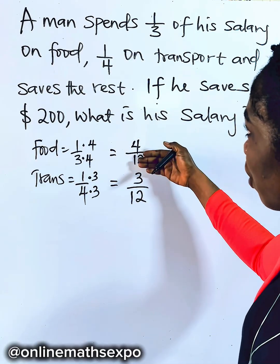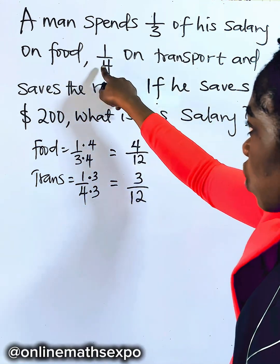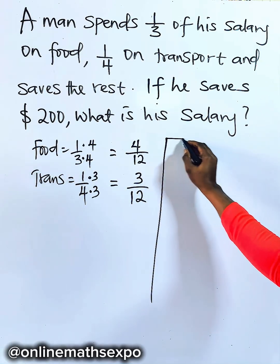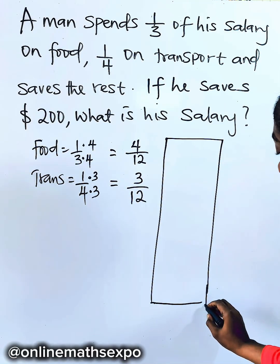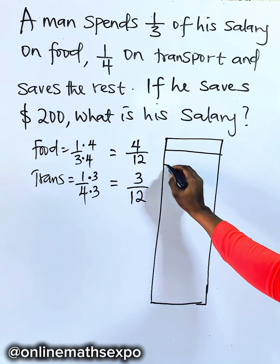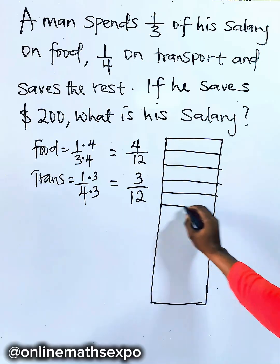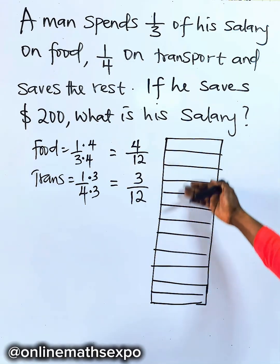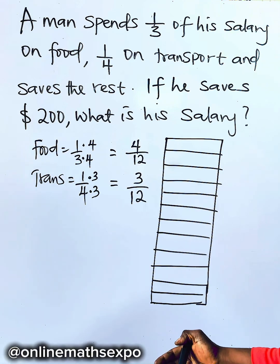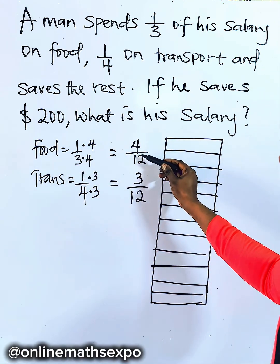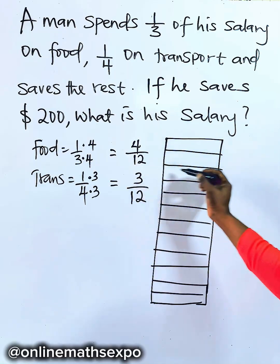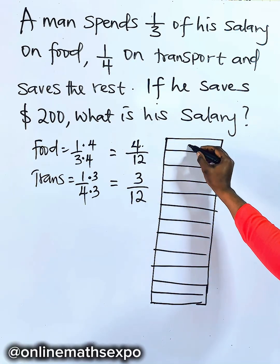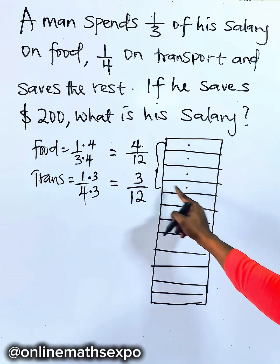So we can see the fractions spent on food and transport. Let's use a bar to divide the man's salary into 12 equal parts: 1, 2, 3, 4, 5, 6, 7, 8, 9, 10, 11, and 12. We've seen that the amount spent on food is 4 out of 12, so parts 1 through 4 represent food.